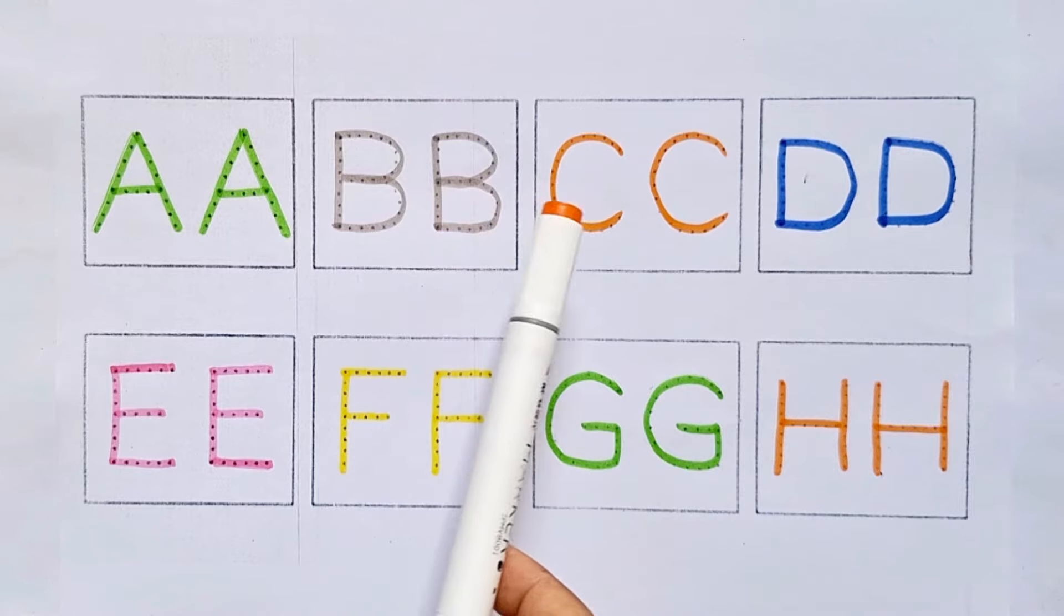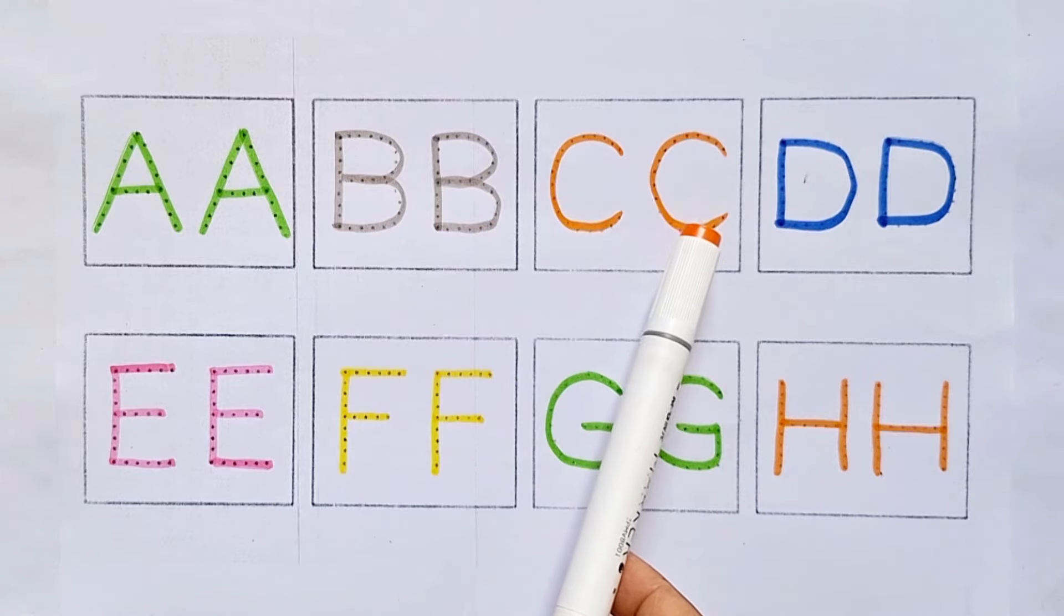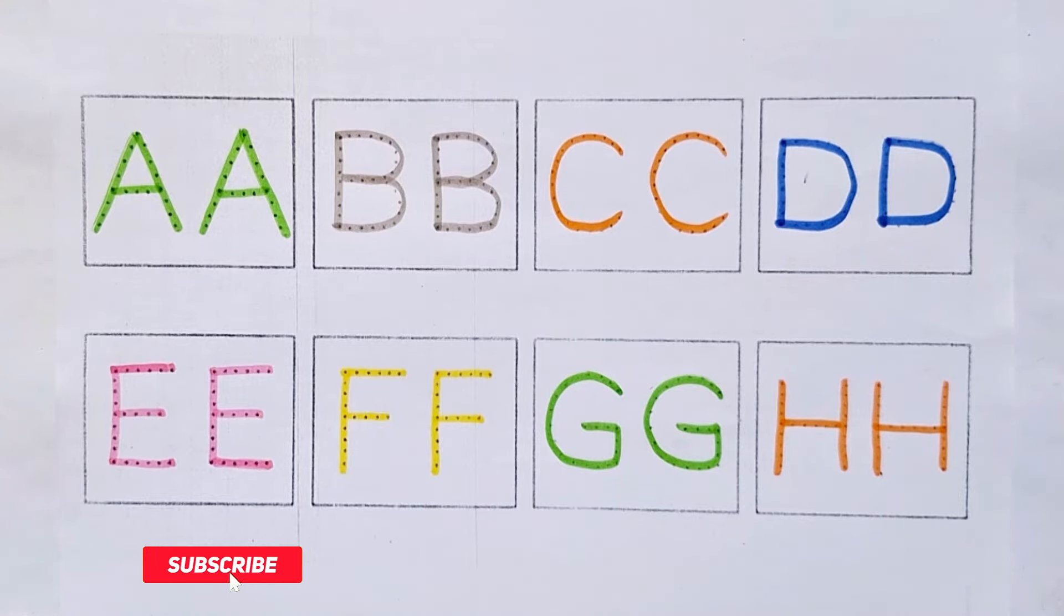A for apple and A for airplane, B for ball and B for balloon, C for cat and C for cow, D for dog and D for doll, E for elephant and E for eagle, F for fish and F for fan, G for giraffe and G for goat, H for head and H for hen.